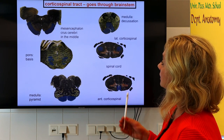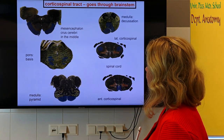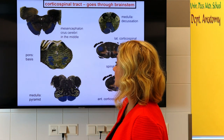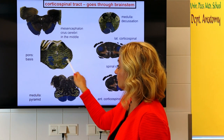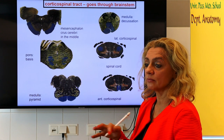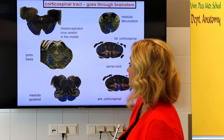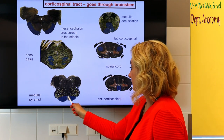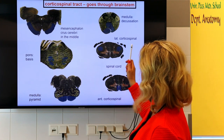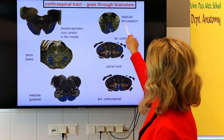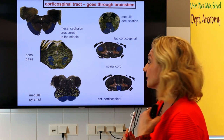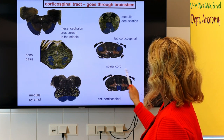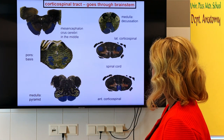The corticospinal tract goes through the brainstem: in the mesencephalon it runs in the middle of the cerebral peduncle, then in the pons the fibers are scattered and form a more loose corticospinal tract. They become compact again in the medullary pyramids, and then there is the pyramidal decussation in the lower level of the medulla.